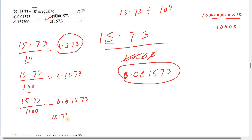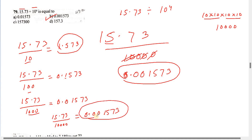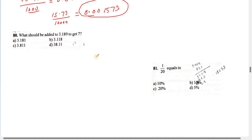15.73 is 100 divided by 0.1573. 15.73 is 100 divided by 0.1795. The answer is 0.01753. Number B: 2.8. I'm going to switch the numbers in the video. It's easy to play.